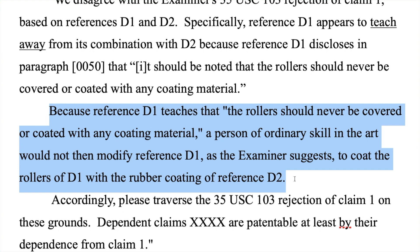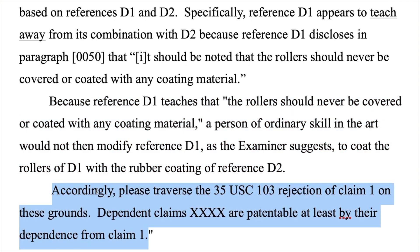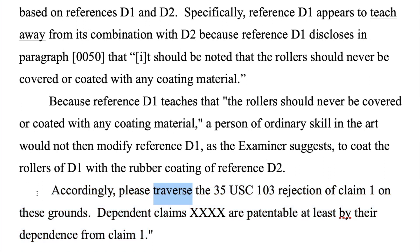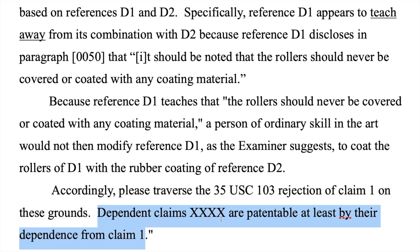We're saying that because D1 says don't coat these rollers, the examiner cannot argue that you should coat those rollers or put rubber on them — the drafter of D1 says don't do it; it teaches away from it. Then the action you want the U.S. attorney to take: accordingly, please traverse — traverse means argue against without amendment — please traverse the 35 U.S.C. 103 rejection of claim one on these grounds. And if you have dependent claims, you can add: the dependent claims are patentable at least by their dependence from claim one. That completes the instruction.